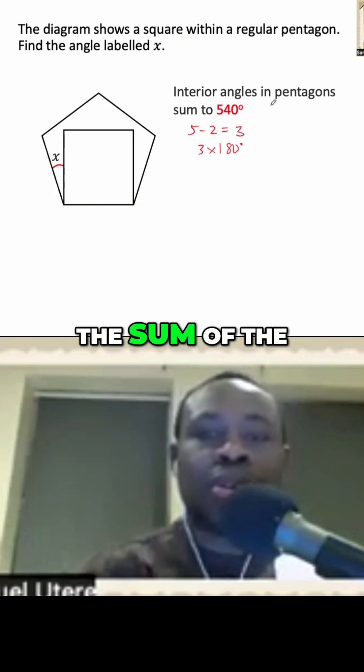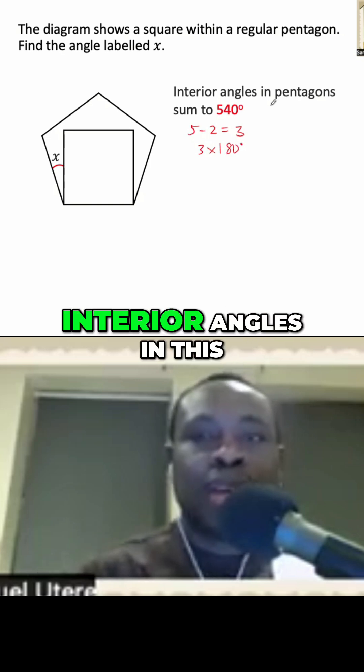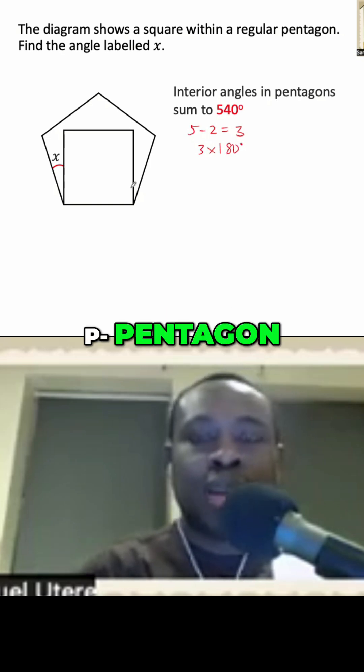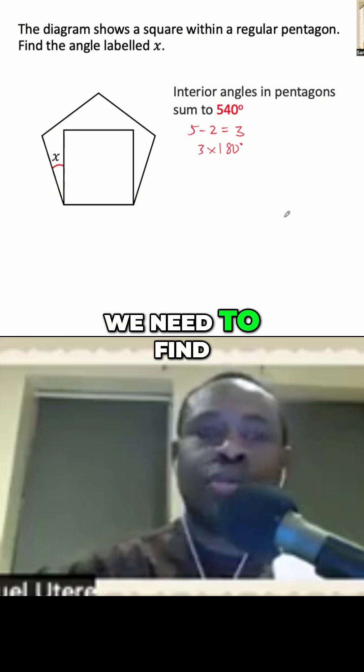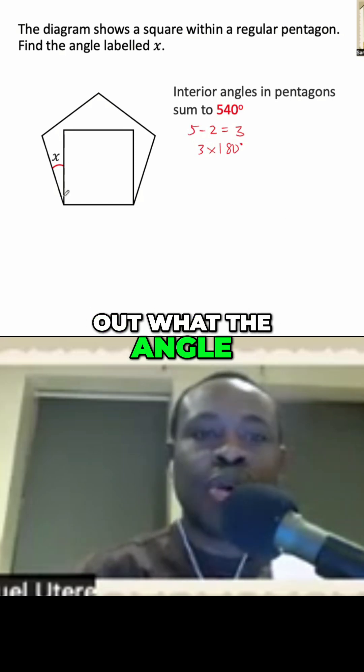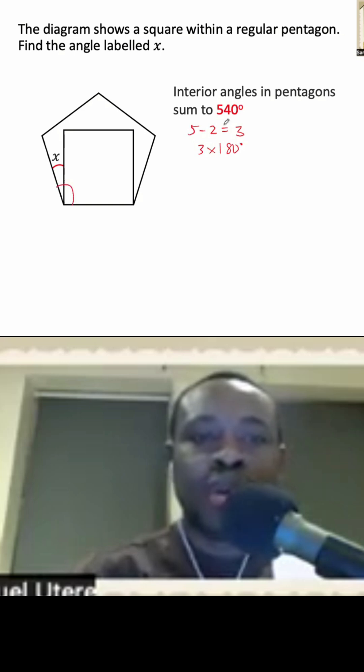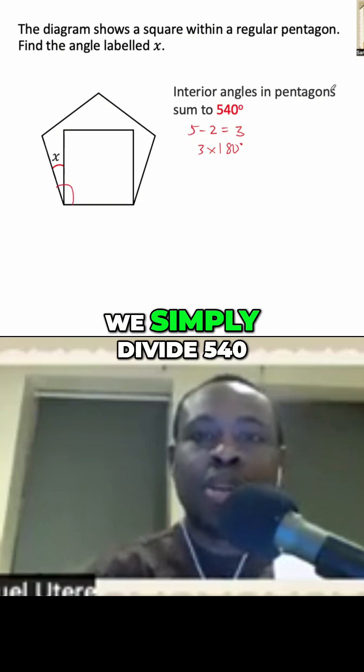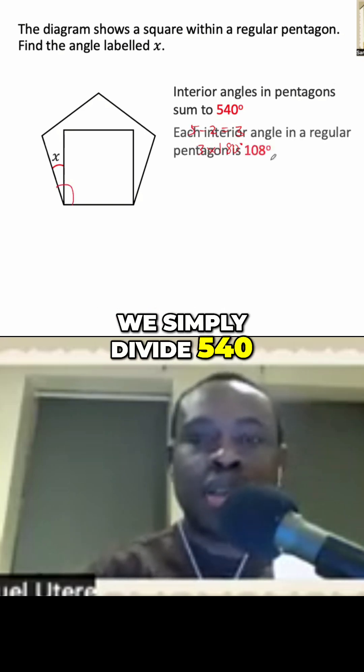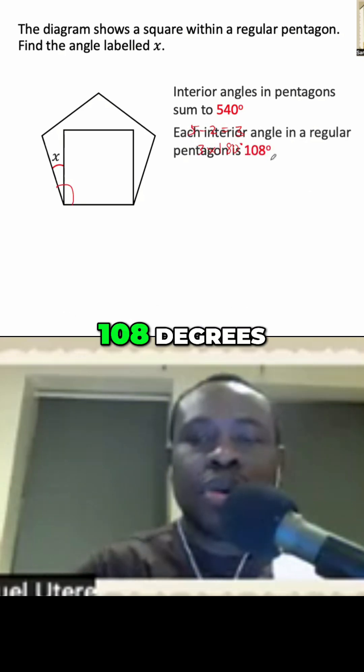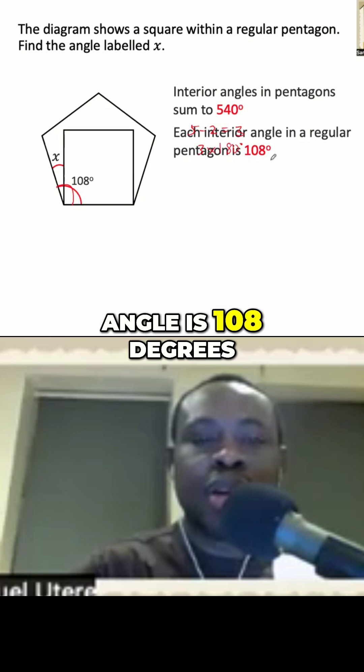Now that we know the sum of the interior angles in this pentagon, we need to find out what the angle of each of these angles are. To find that, we simply divide 540 by 5, which will give us 108 degrees. So each of these angles is 108 degrees.